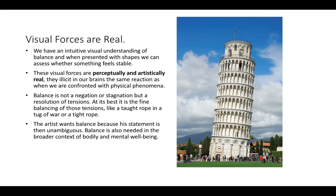Visual forces elicit in our brains the same phenomena as when we are confronted with physical phenomena — the same reaction as when we are confronted with physical forces. To illustrate this, there is an image of the Leaning Tower of Pisa. It looks very unbalanced and that elicits a reaction — most people will feel uncomfortable when presented with that. Another example would be the feeling of vertigo that people get when standing on a very high ledge, looking down. You're not physically being affected by the force; it's actually your brain interpreting the visual information that gives a very real effect.